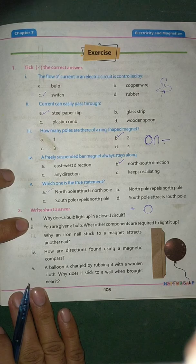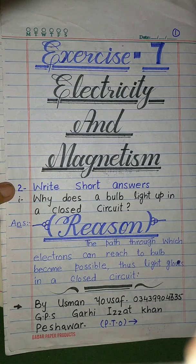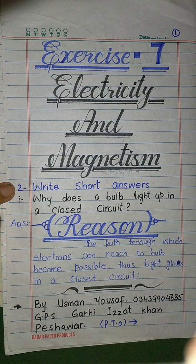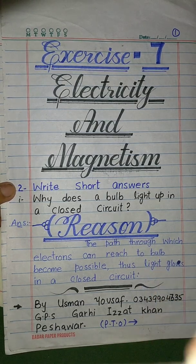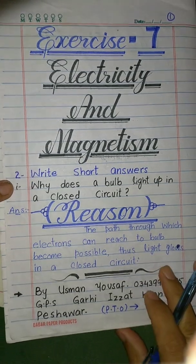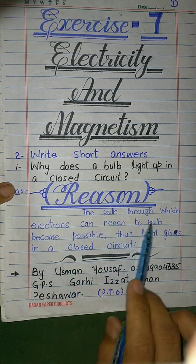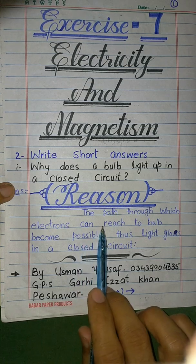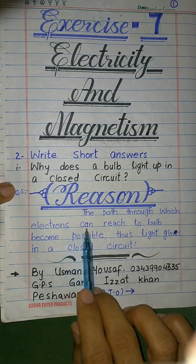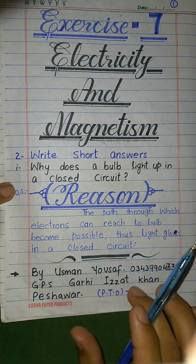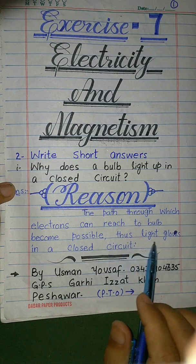Short answers — Exercise 7. Why does a bulb light up in a closed circuit? The reason is: the path through which electrons can reach the bulb becomes possible in a closed circuit, which is why the bulb glows.